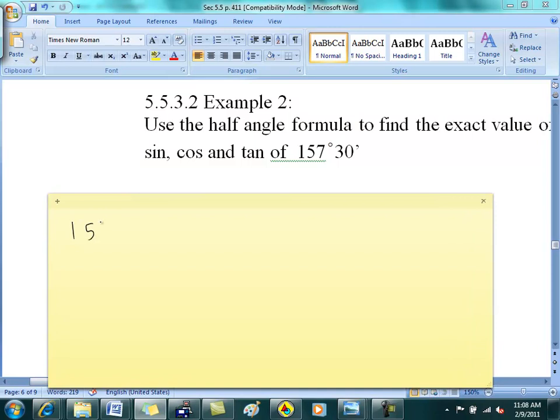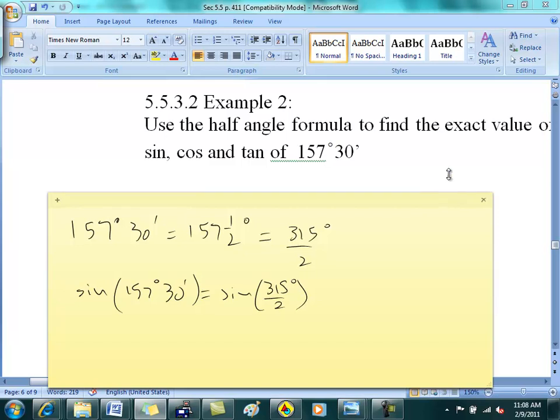Does everybody see that this is this? Everybody see that? 30 minutes is half a degree. Right? 30 divided by 60, it's half a degree. Then does everybody see that this is 315 over 2? Everybody see that? So now notice that I want to find the sine of 157 degrees 30 minutes, which is finding the sine of 315 over 2.